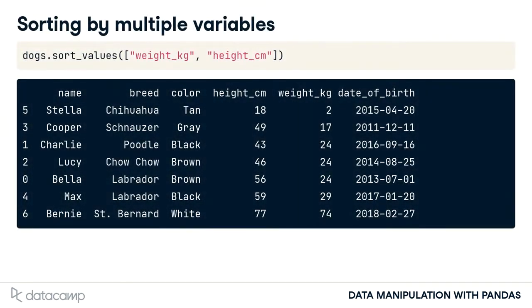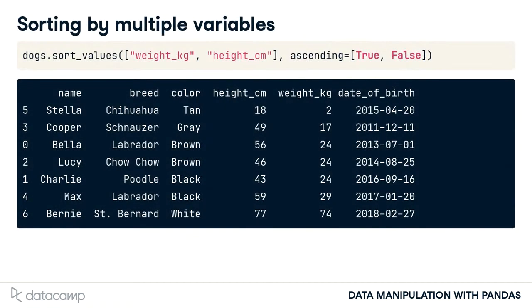We can sort by multiple variables by passing a list of column names to sort_values. Here we sort first by weight, then by height. Now Charlie, Lucy, and Bella are ordered from shortest to tallest, even though they all weigh the same. To change the direction values are sorted in, pass a list to the ascending argument to specify which direction sorting should be done for each variable. Now Charlie, Lucy, and Bella are ordered from tallest to shortest.